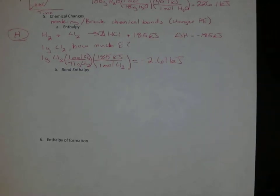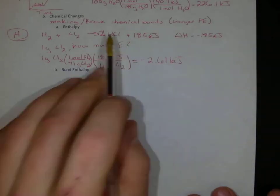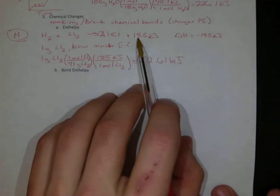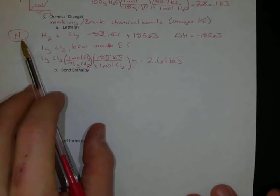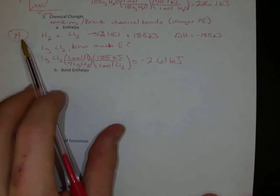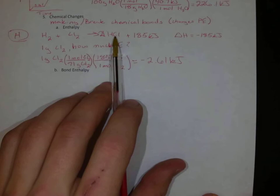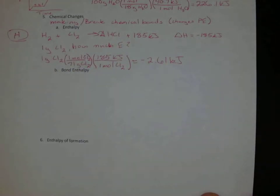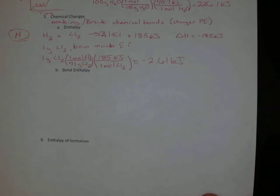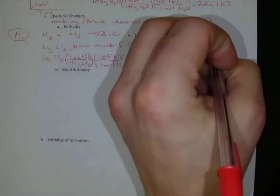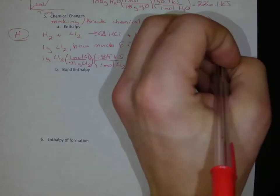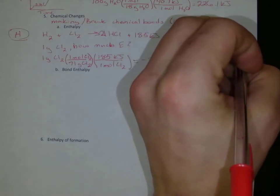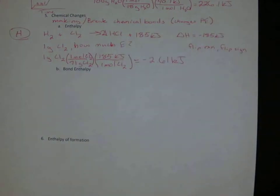Again, the enthalpy, if we were to take this reaction, and I were to flip this reaction, now my 185 kilojoules would be on the left, and so it would take 185 kilojoules to get this reaction to occur. So for me to take HCl and get back to H2 and Cl2, I would need 185 kilojoules. So if I flip the reaction, I flip the sign of my enthalpy.